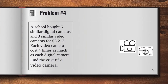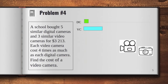Fourth problem. This time, you may use a calculator to solve this problem. A school bought five similar digital cameras and three similar video cameras for $3,213. Each video camera costs four times as much as each digital camera. Find the cost of the video camera. Now, between the two items, we know that the digital camera costs less. So we can draw a representation for that by drawing one unit. And now for the video camera, we can draw a longer bar since it costs more than the digital camera — four times more.